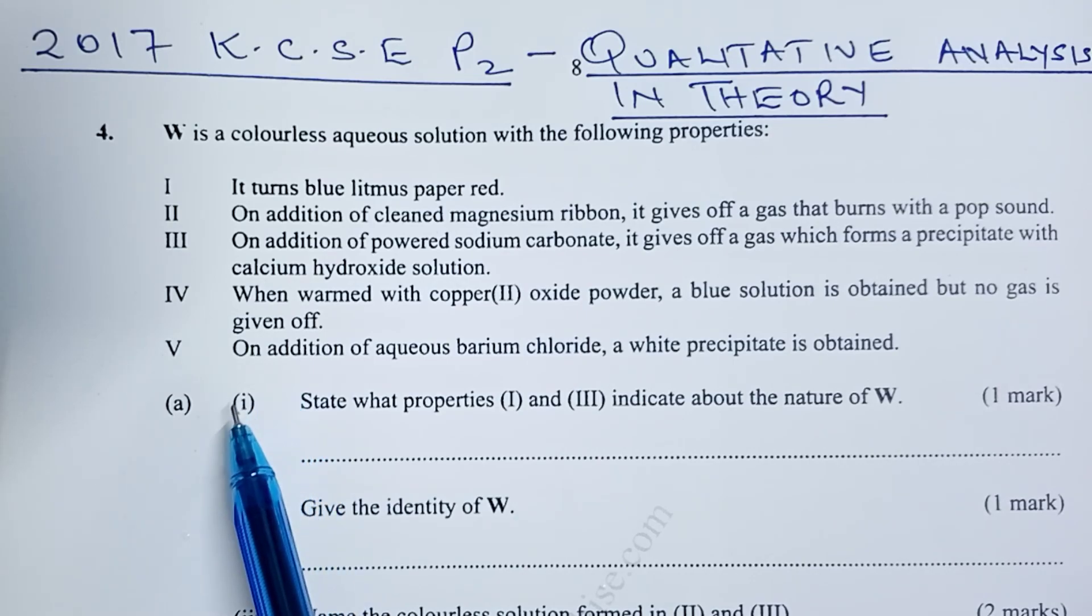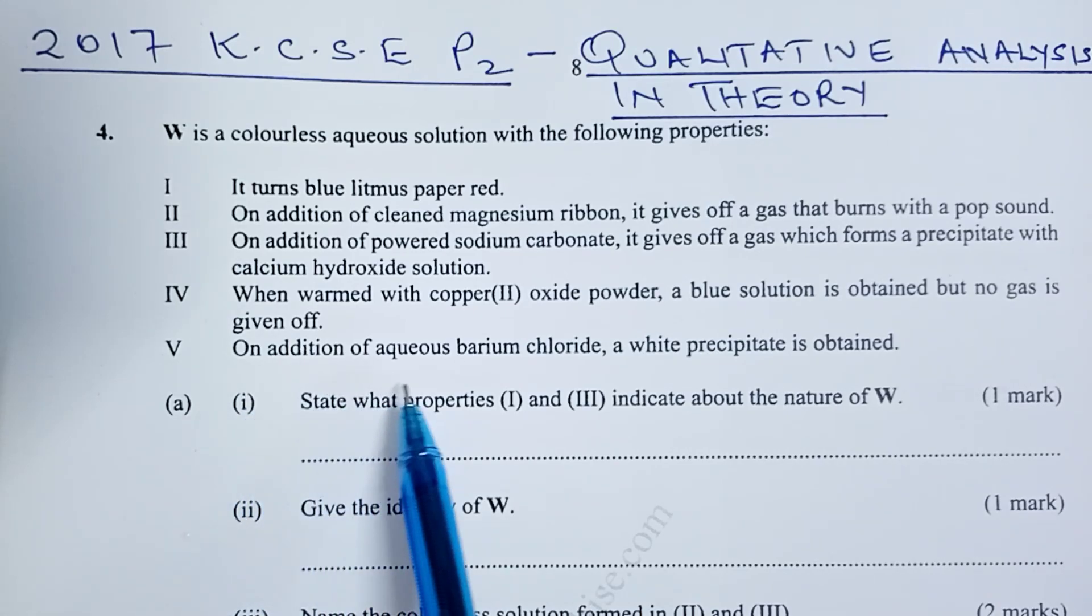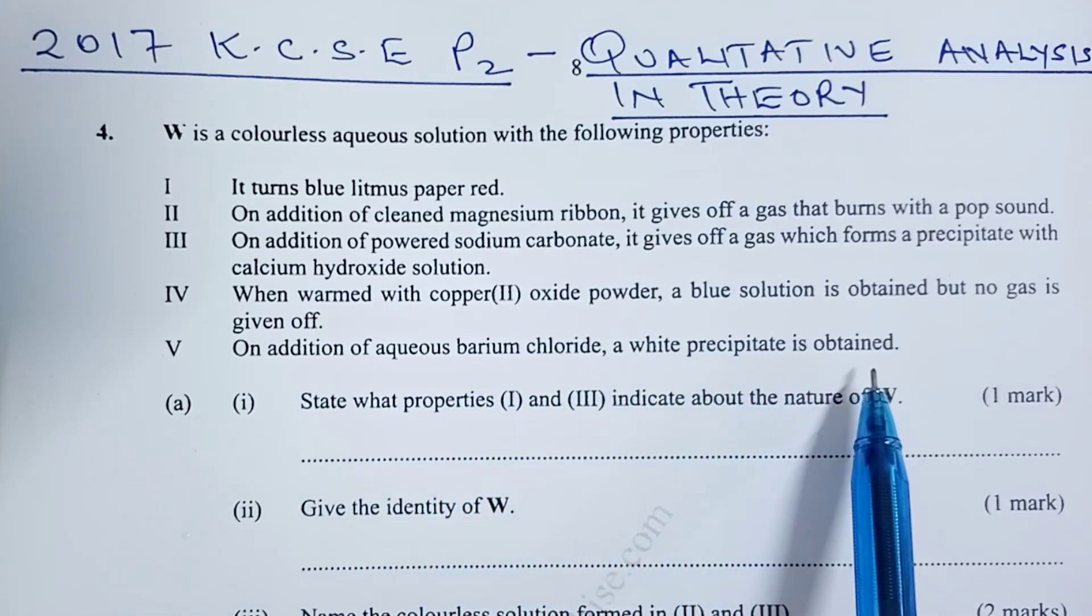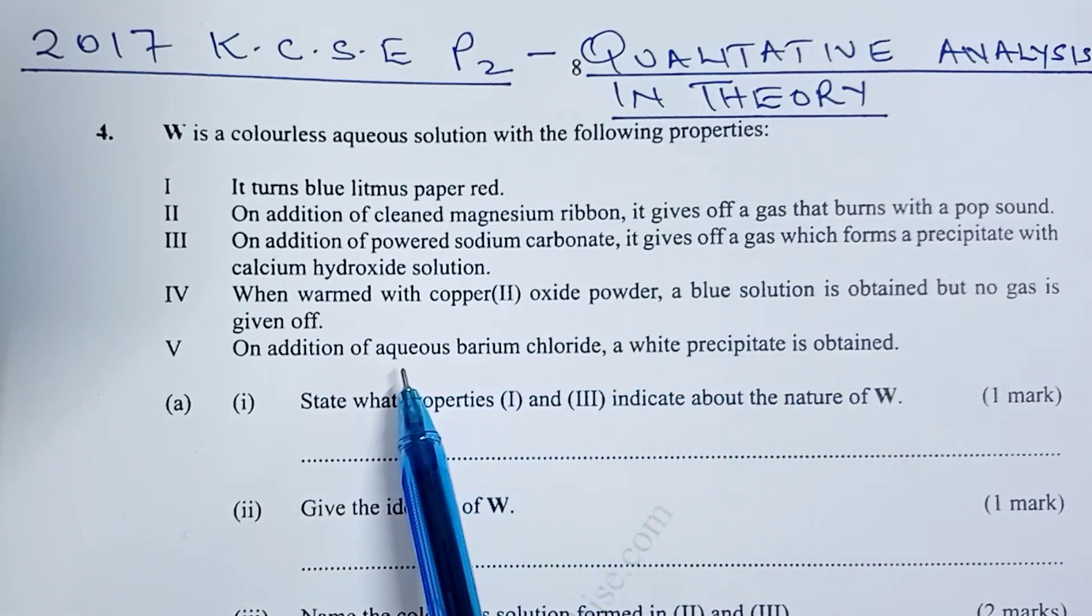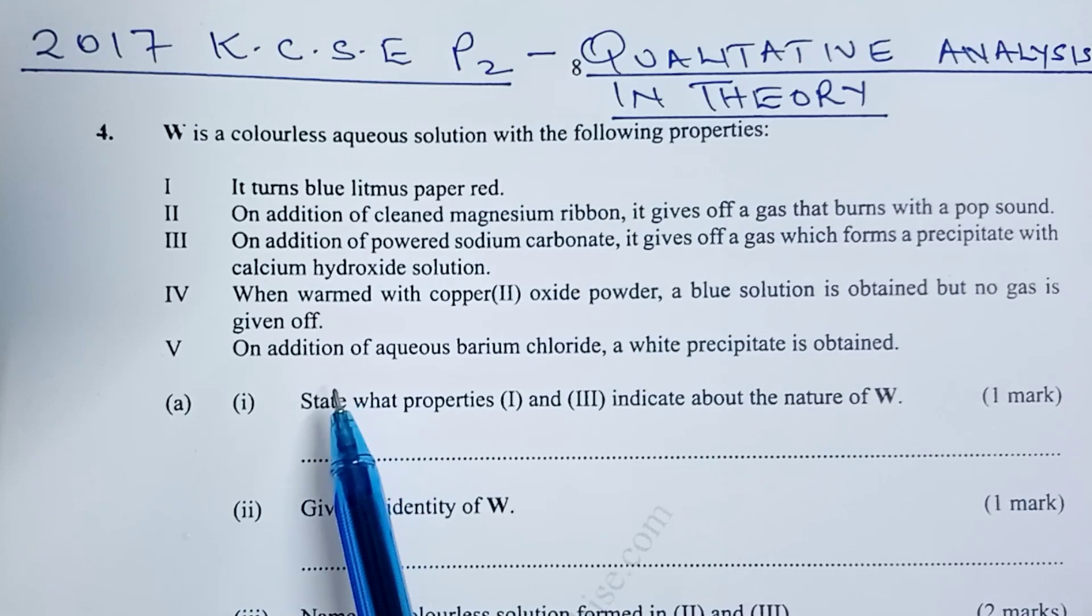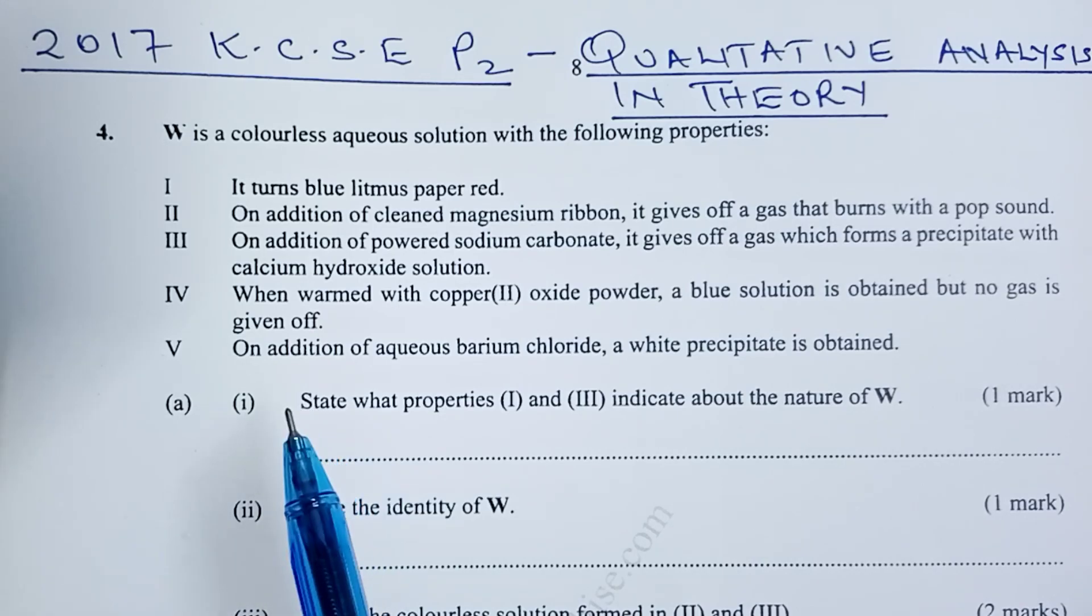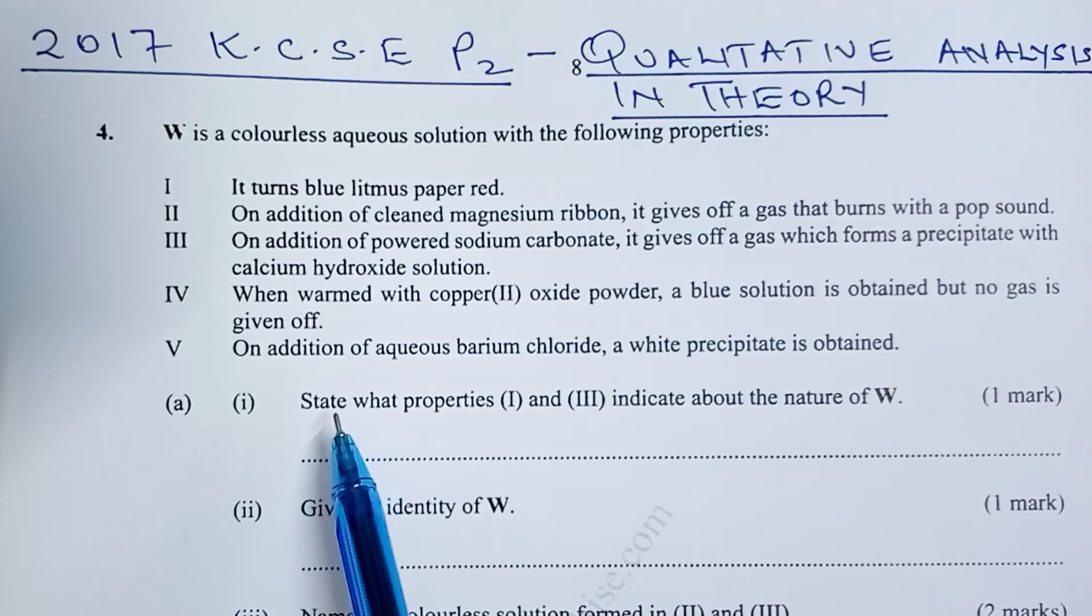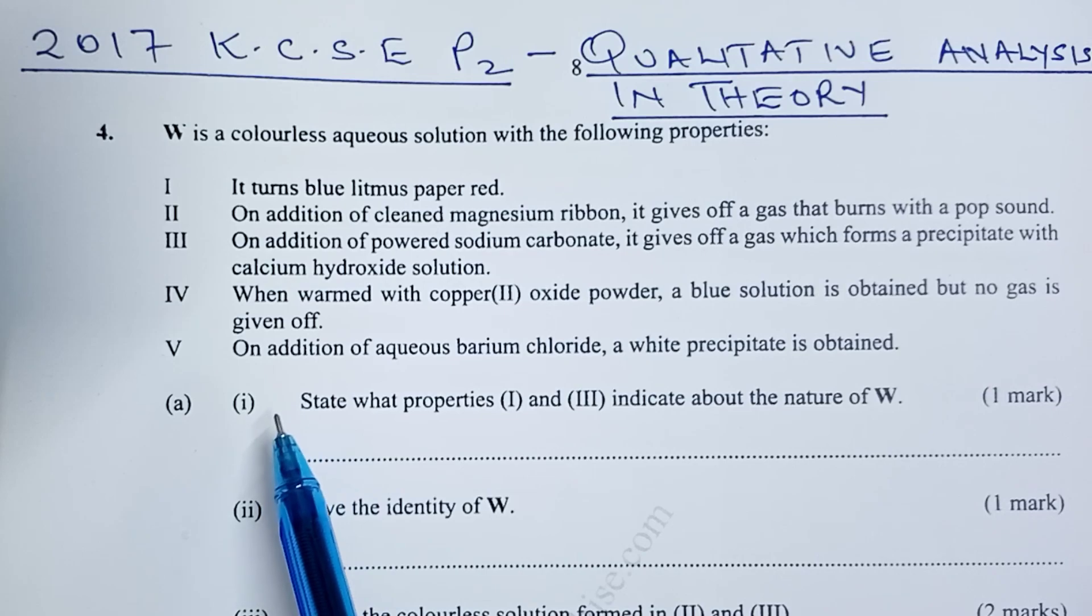Lastly, on point 5, we are told on addition of aqueous barium chloride a white precipitate is obtained. So point 5 is giving us a hint that the anion present in acidic aqueous solution W is actually sulfate. So to identify W we now have a hint. The question we want to ask is which solution is acidic and contains sulfate ions? The answer is very simple. W is actually sulfuric acid in its dilute form. So with that we can now go ahead and answer our questions.